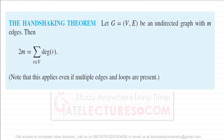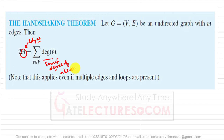Now let us look at what is the handshaking theorem, or handshaking lemma. This theorem says that let G be an undirected graph with m edges, then 2m is equal to the summation over all vertices of the degree of v. It means that the sum of degree of all vertices is twice the number of edges.